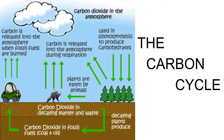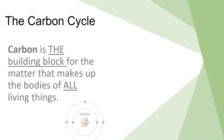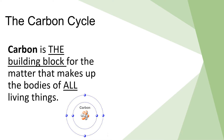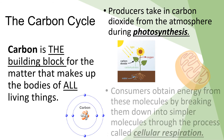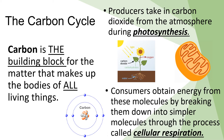Moving on, here we are about to start the carbon cycle. Carbon is the building block for the matter that makes up the bodies of all living things — carbon is in everything. Producers take in carbon dioxide from the atmosphere during photosynthesis, then consumers obtain energy from these molecules by breaking them down into simpler molecules through the process called cellular respiration.